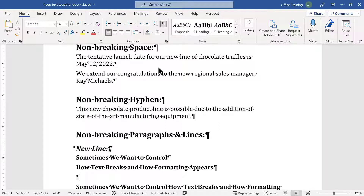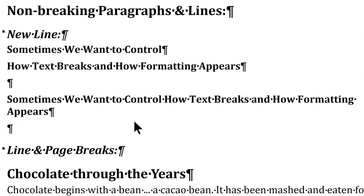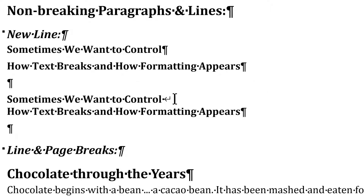Let's turn Show/Hide back on as we look at other ways to control keeping text together. Sometimes the challenge is that we have a longer line or title and want to break it at a specific place. But if we hit the hard return, we can have issues with formatting, especially if a style is associated with it or we have space below the paragraph. So instead, move to the place where you want to create that break. Rather than pressing Enter, press Shift+Enter. With Show/Hide turned on, you'll see a special character — what you've created is a new line, a line break, but you're still in the same paragraph. A really handy feature: Shift+Enter.